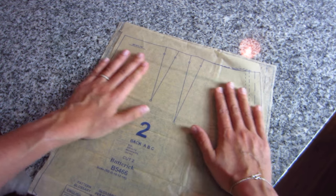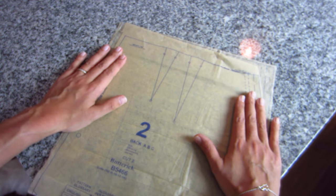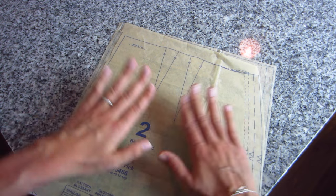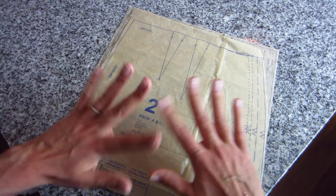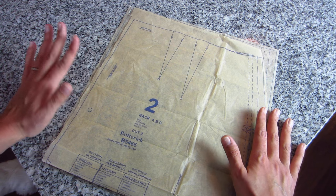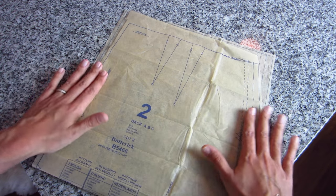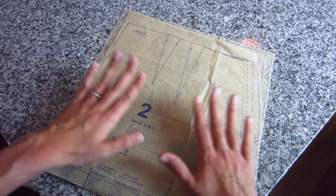So it's really important that you get out your iron, put it on a low heat setting with no steam, and just press them out. It's very thin tissue, it presses out really easily, and it'll make your cutting lines and your finished garment that much nicer.